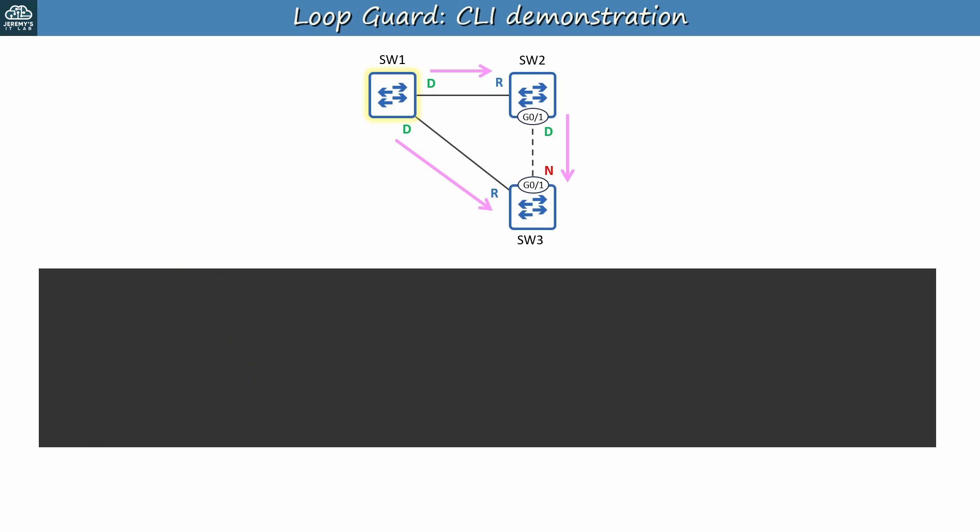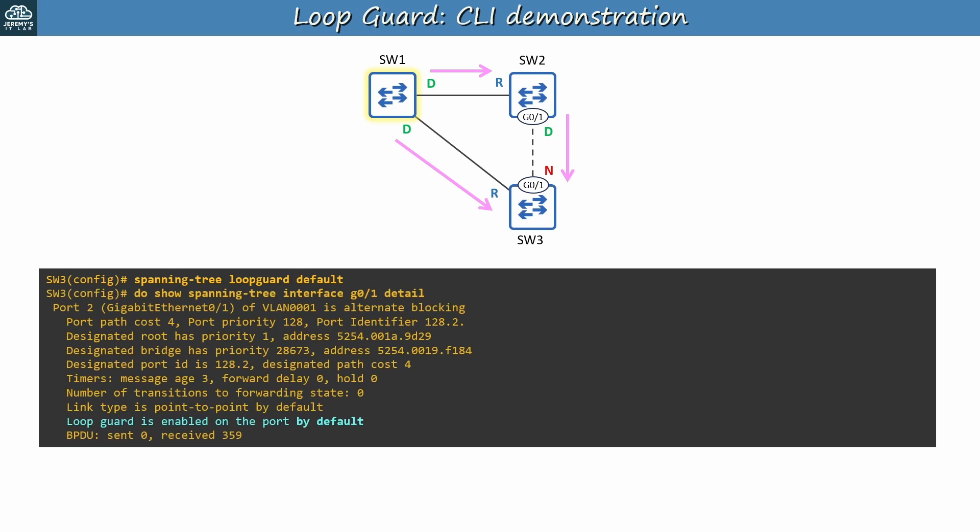Before we see it in action, let's also see how it looks when you enable it by default. Instead of enabling it in interface config mode, I used 'spanning tree loopguard default' to enable it in global config mode. The output of this command is basically the same, but it says 'by default' at the end. Now let's see what happens when Loop Guard blocks a port.